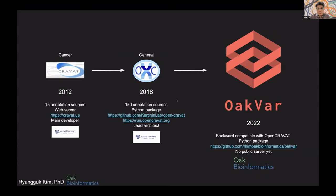Then in 2018, the project Open CRAVAT started by the same lab, and I was the lead architect. I proposed making a general and also locally available Python package to annotate genomic variants, and that resulted in Open CRAVAT as a Python package. You can locally install and use it on your laptop or desktop to analyze your own genome. The web server is still available at run.opencarvet.org, which is used in this workshop.